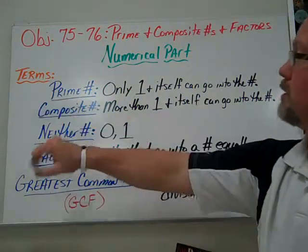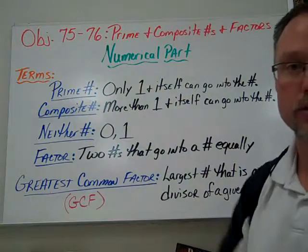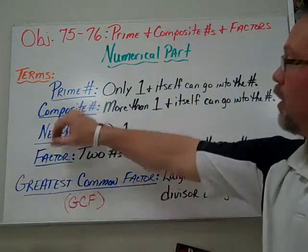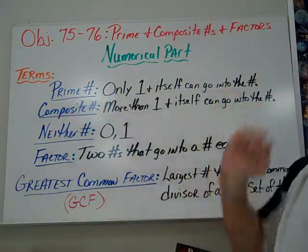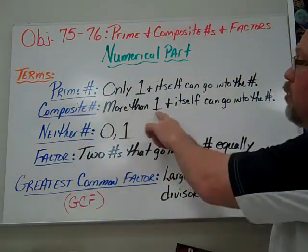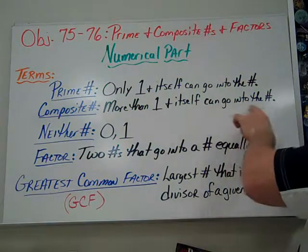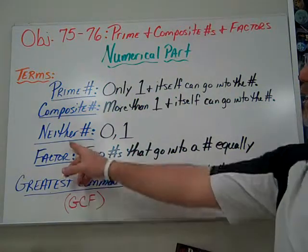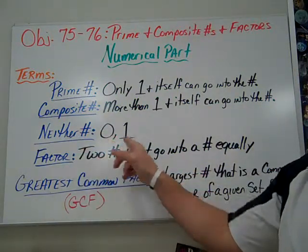Some of the terms that we want to talk about, and these will carry over to part two as well, are prime number: only one and itself can go into the number. A composite number: more than one and itself can go into the number. A neither number is considered zero and one.